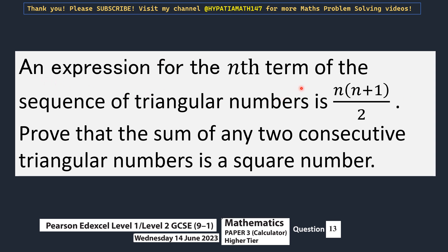An expression for the nth term of the sequence of triangular numbers is n times n plus 1 out of 2. Prove that the sum of any two consecutive triangular numbers is a square number.